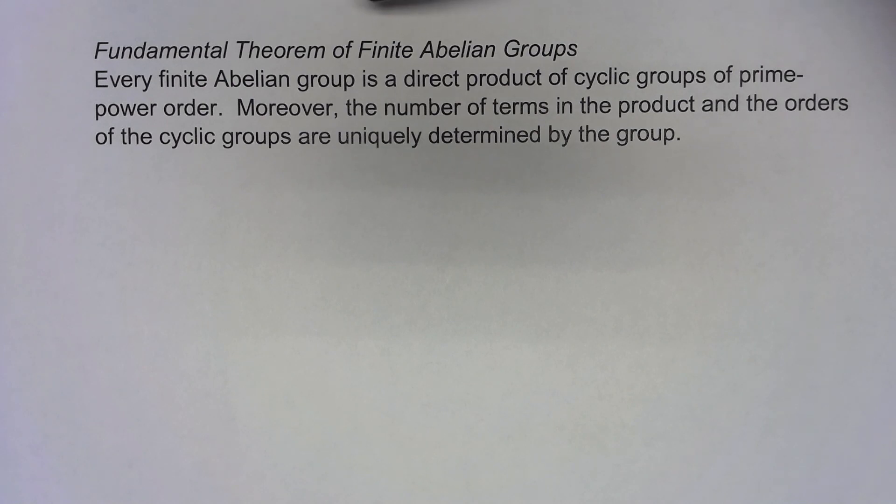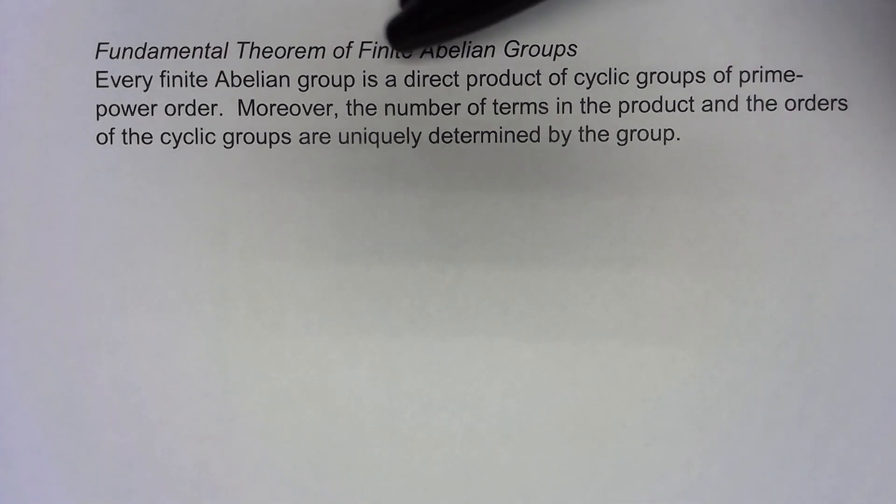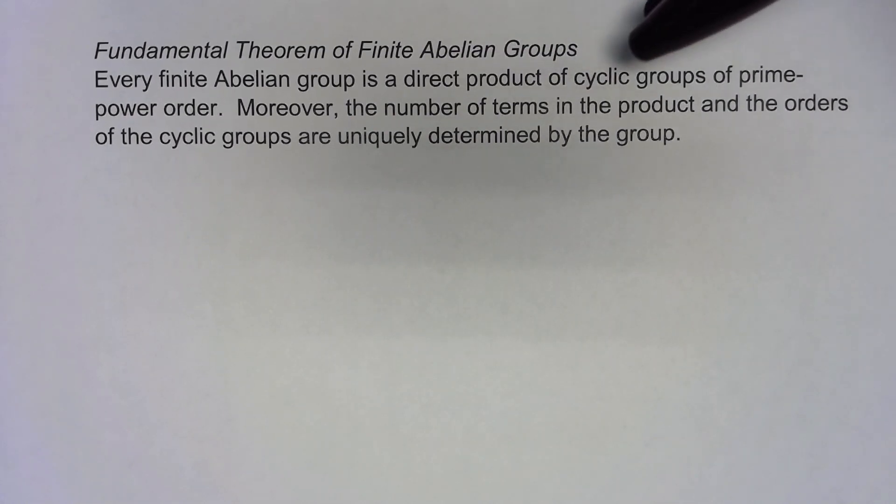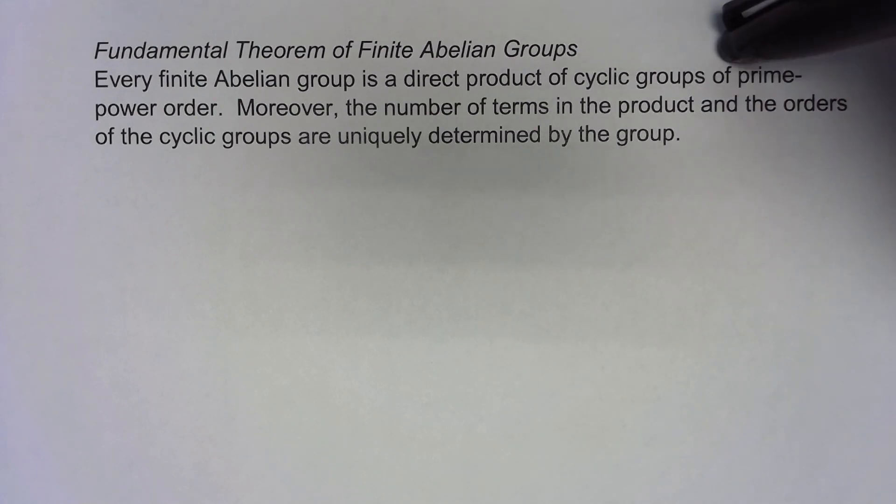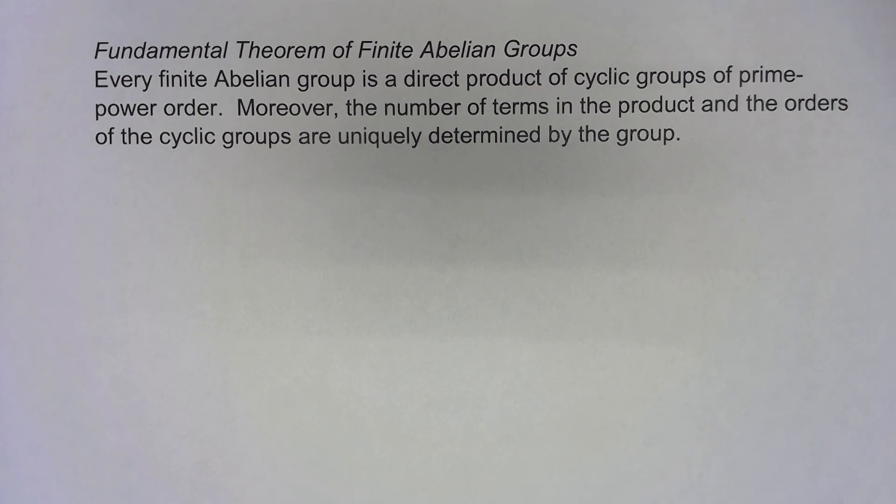Every finite abelian group, and it's important, both finite and abelian, is a direct product of cyclic groups of prime power order. It's important the prime power, so it could be a prime or it could be something like 3 squared.